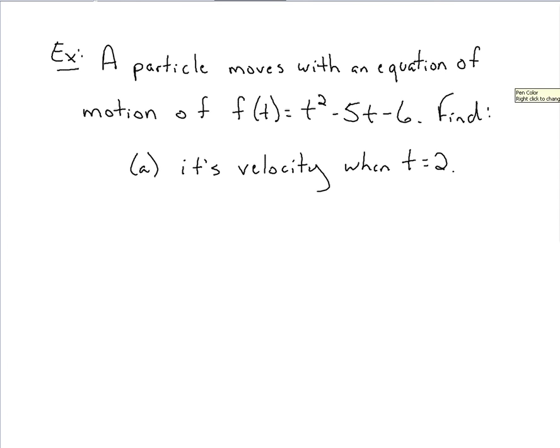Okay, so you've got a particle that moves with an equation of motion defined as f of t, finding its velocity. All we have to do when we want to find the velocity at a given time is take the derivative of the function, so finding f prime of t here. That equals, again, just individual terms to work with here, so applying our power rule. On t squared, bring 2 down, got t to the first left over, minus, for 5t, t drops, so it's just minus 5. For minus 6, that's a constant, so that goes to 0. There's f prime of t.